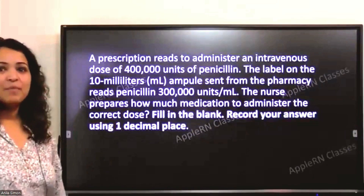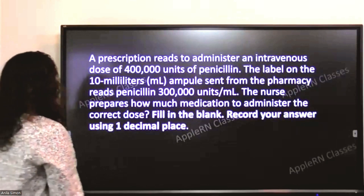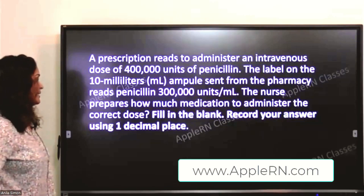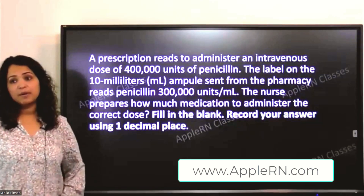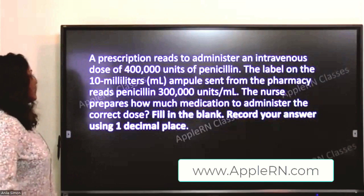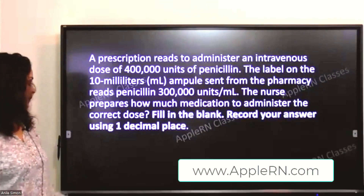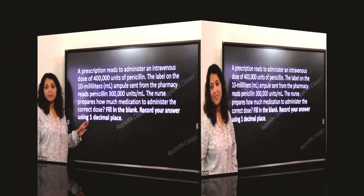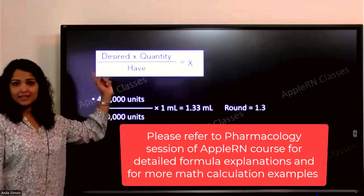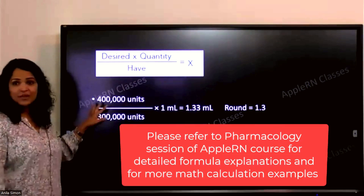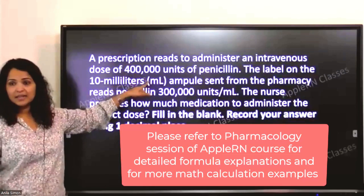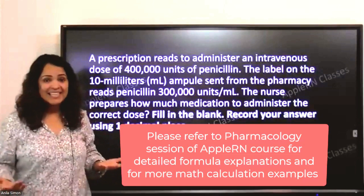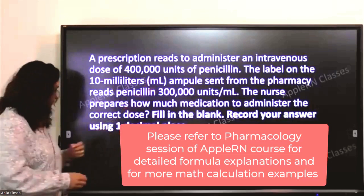Here we go. A prescription reads to administer an IV dose of 400,000 units of penicillin. The label on the 10 milliliter ampule sent from the pharmacy reads penicillin 300,000 units per ml. The nurse prepares how much medication to administer the correct dose. Record your answer using one decimal place. The formula we are going to use is the basic one. First, we have to look at the desired — what do we need, what do we have to give, what should the patient get? The desired is 400,000.